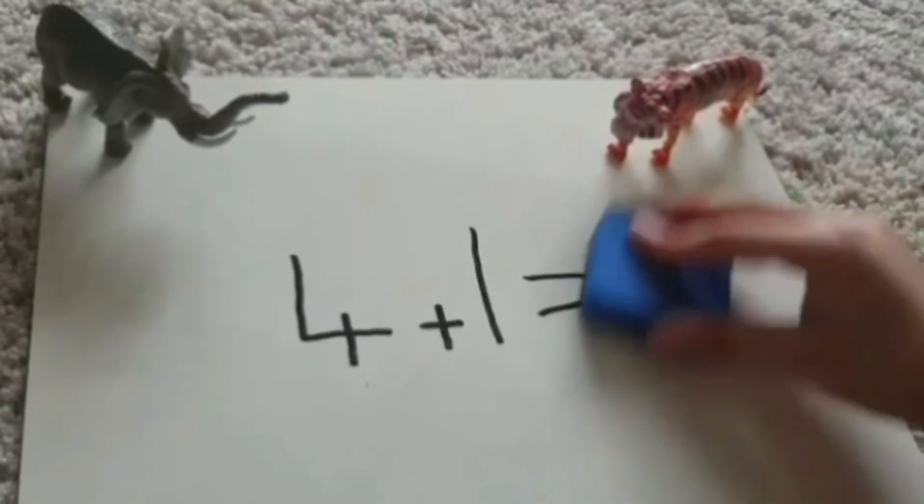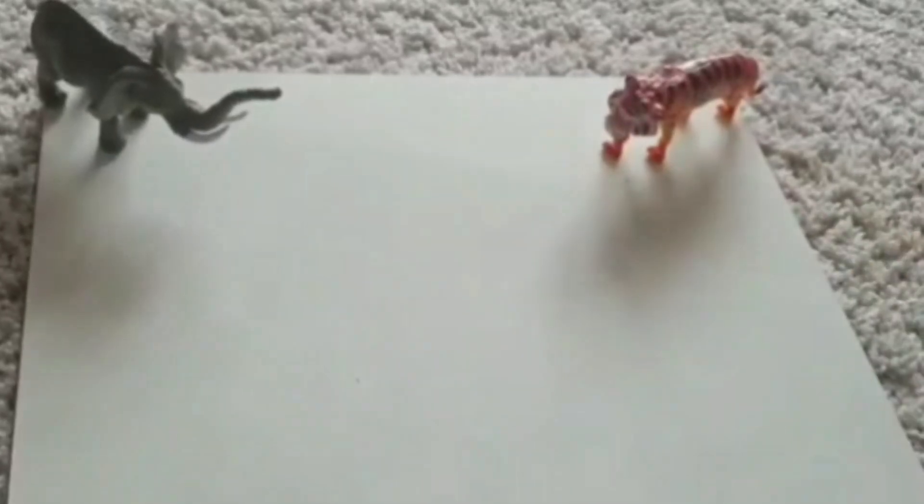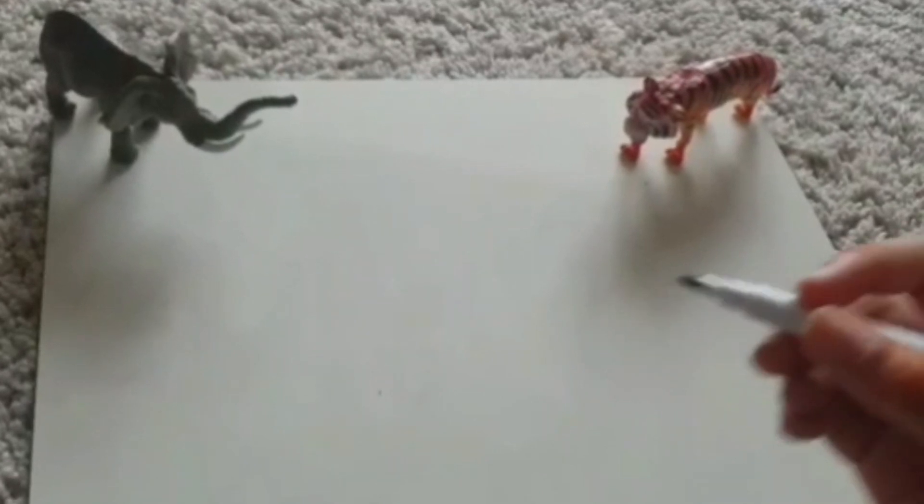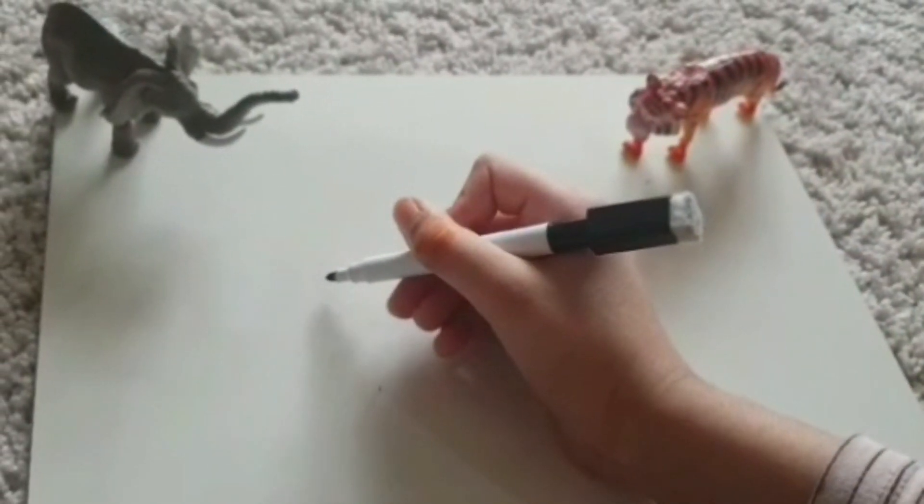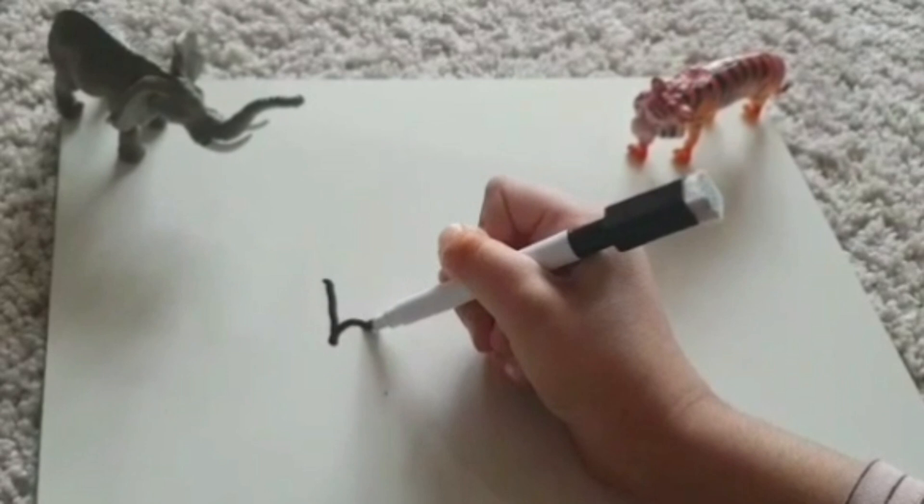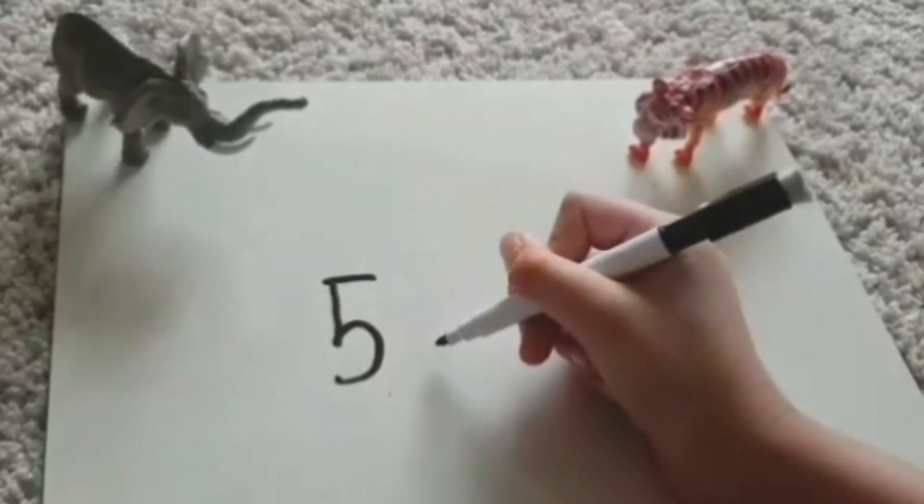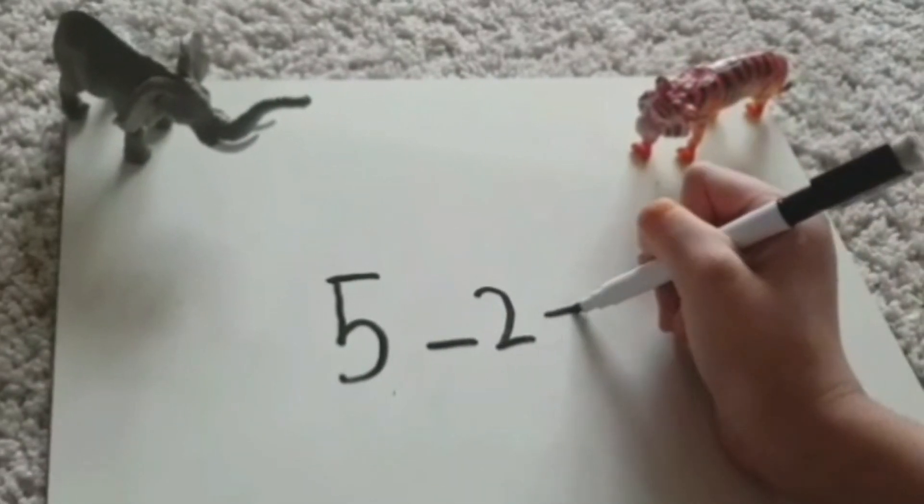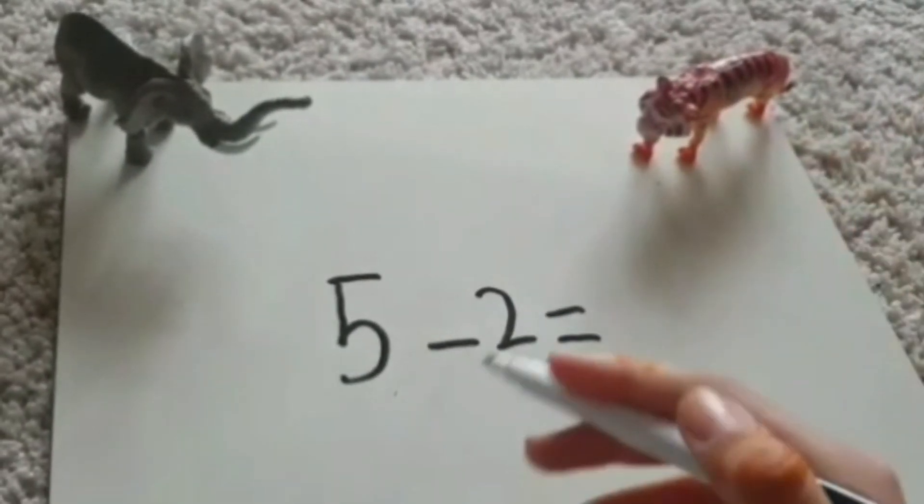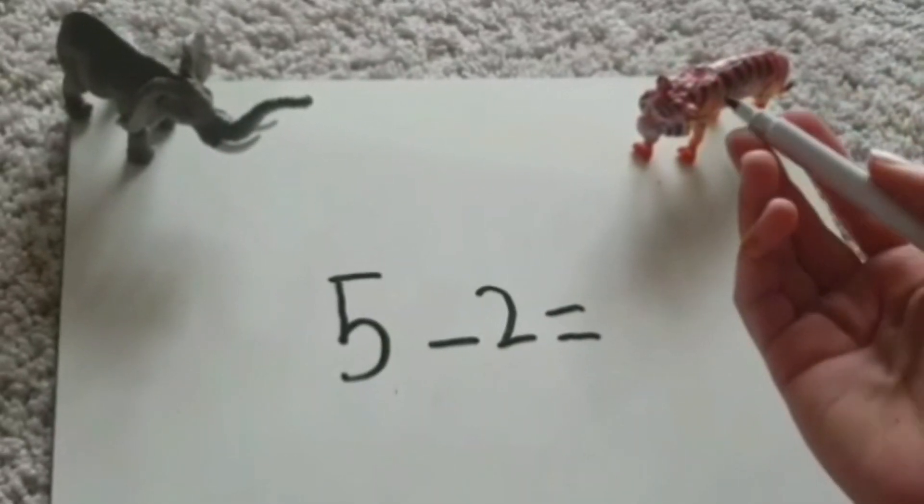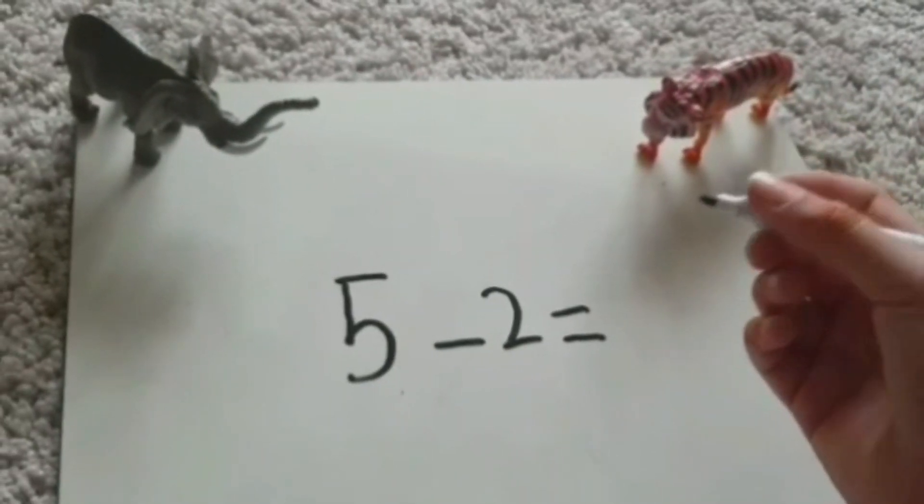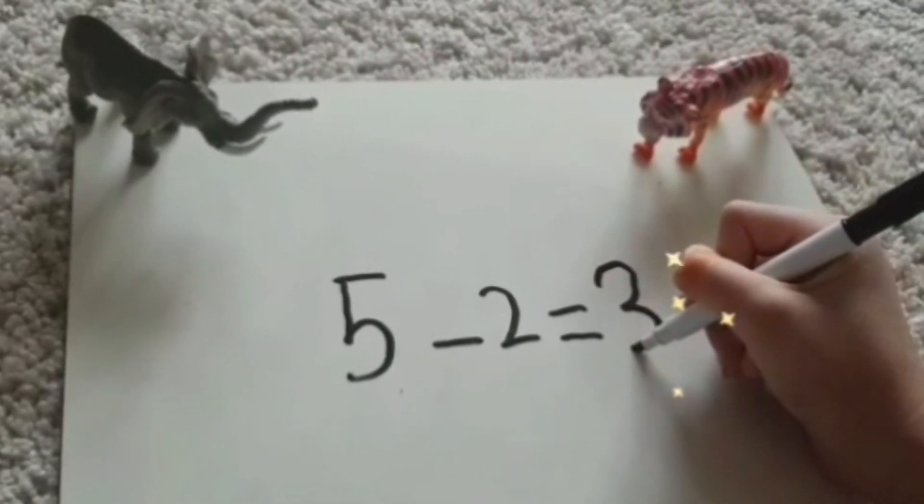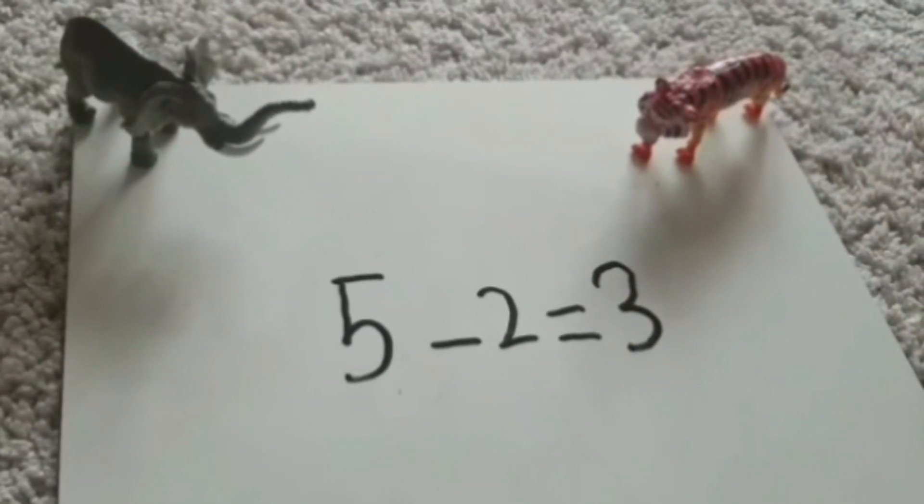Now Tiger, let's do another subtract problem for you. So let's do, hmm, I know. Five minus two equals. So we're taking away two from five. Do you know what that is? That's right. It's the number three.